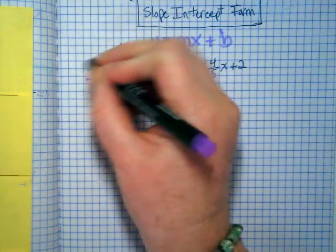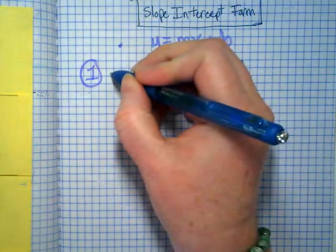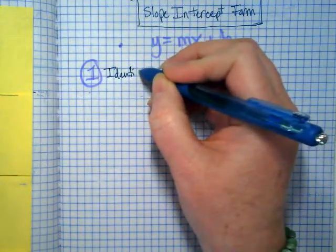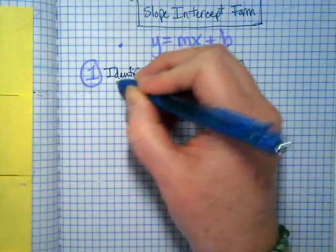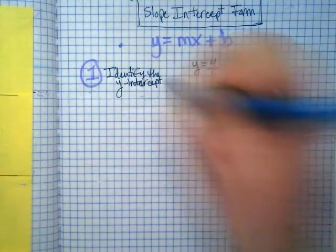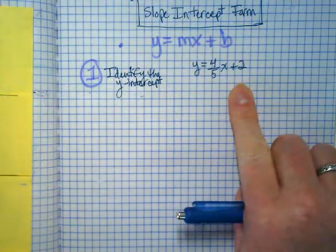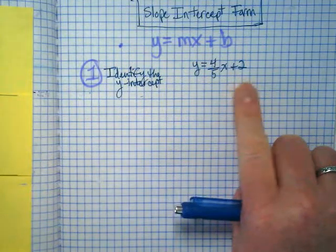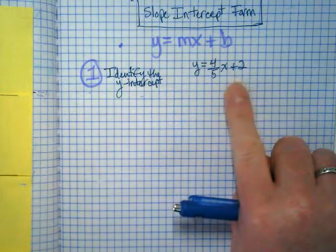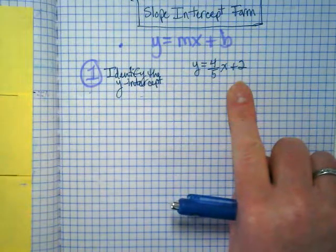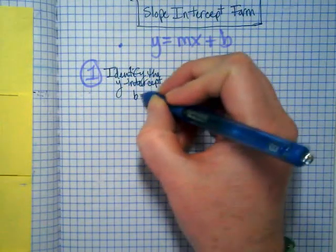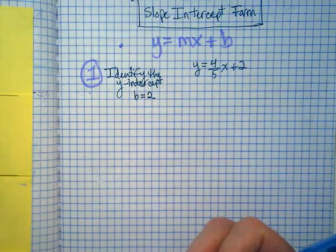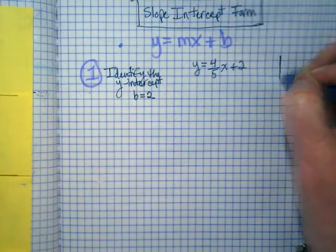Step 1, what does it say right there in the book? Identify the y-intercept. What is the y-intercept of this equation? It's 2, or positive 2. That's important because there's going to be multiple twos on the graph. So our b is 2, that means that the y-intercept is 2.